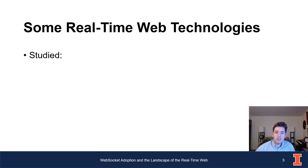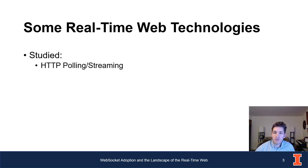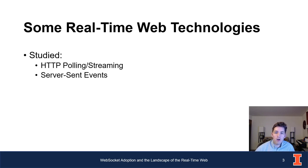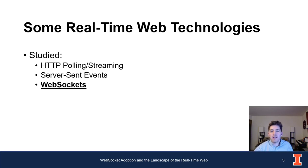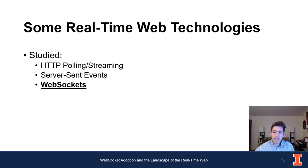We picked a few specific technologies to look at — by no means exhaustive. The first was HTTP polling or HTTP streaming, the earliest real-time web technology. We also looked at server-sent events, offered through the JavaScript EventSource API, which allow JavaScript code to register event listeners and react to server messages in real-time. The main focus of this study was WebSockets, standardized in 2011, which allow full-duplex bi-directional communication between clients and servers.